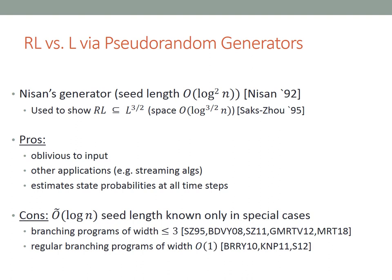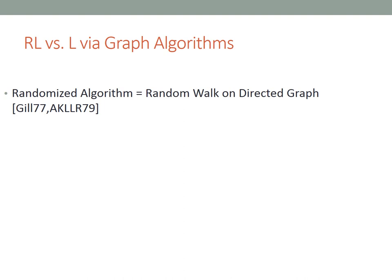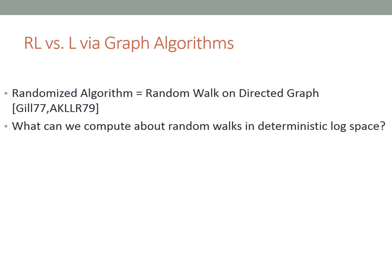Another approach to proving RL equals L is via the use of graph algorithms. This approach exploits the fact that a randomized algorithm can be equivalently viewed as a random walk on a corresponding directed graph, where nodes correspond to states and edges correspond to transitions. Using this equivalence, running the randomized algorithm is equivalent to performing a random walk on this directed graph, so any question about the algorithm can be answered by asking the corresponding question about the graph.